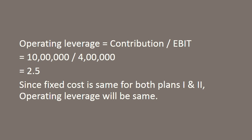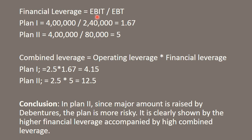Since the operating leverage for both plans remains the same, we cannot use it as a parameter for comparing the two plans, so we calculate financial leverage. The formula is EBIT upon EBT — the difference between these two is only interest. For Plan 1: 4 lakh upon 2 lakh 40,000 = financial leverage of 1.67. For Plan 2: 4 lakh upon 80,000 = financial leverage of 5.